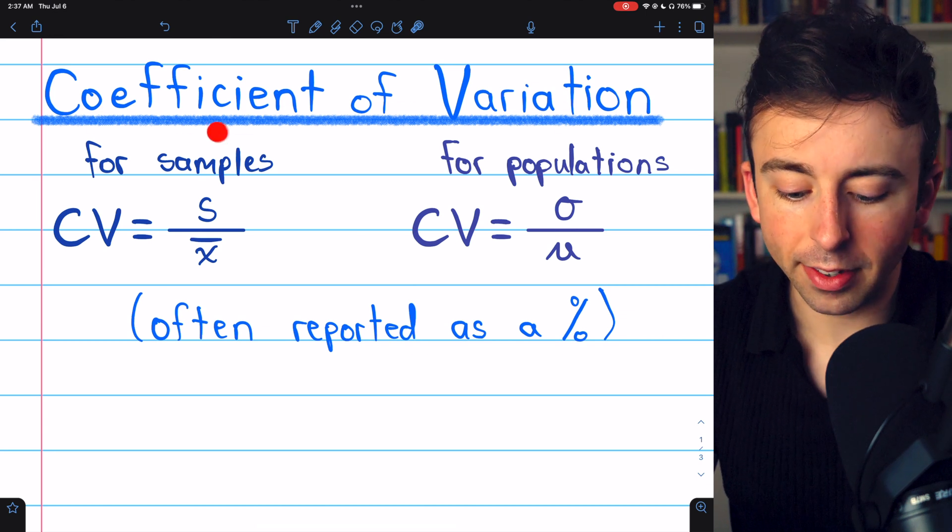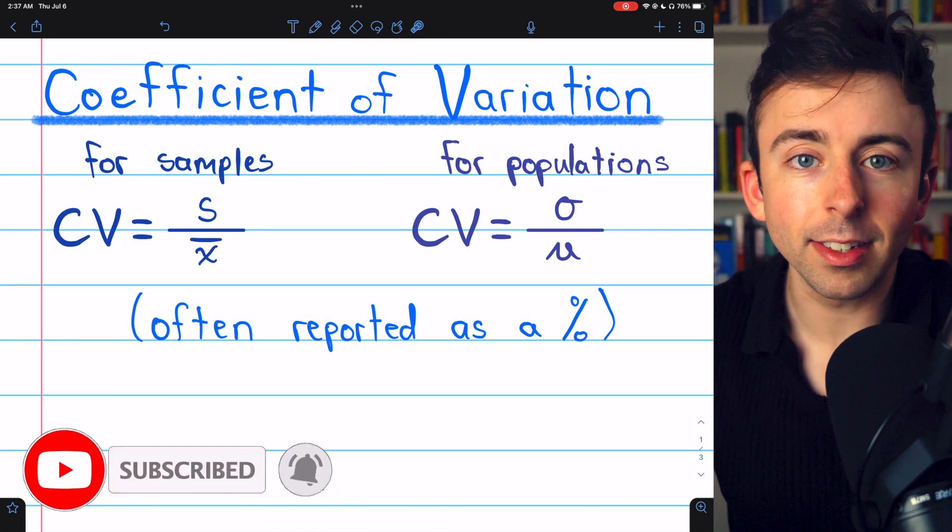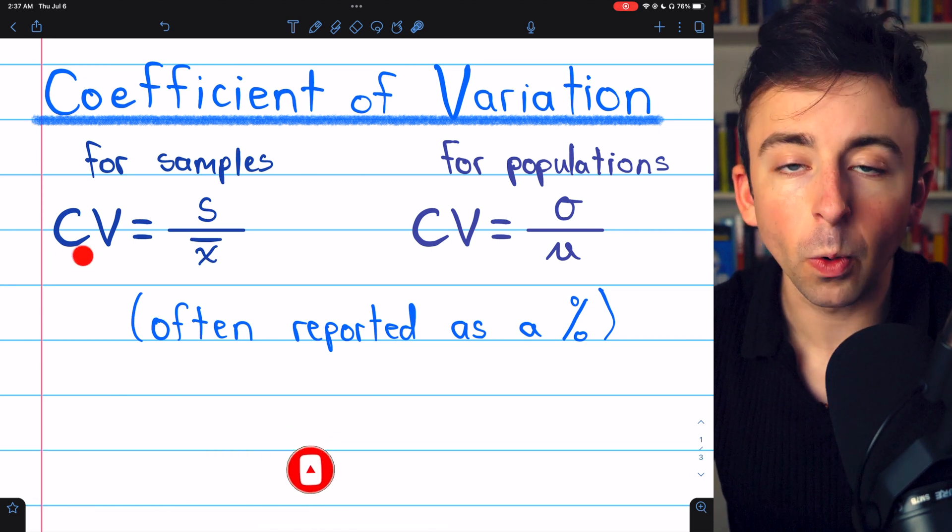The coefficient of variation of a sample is the sample standard deviation divided by the sample mean. That's the coefficient of variation, or CV.